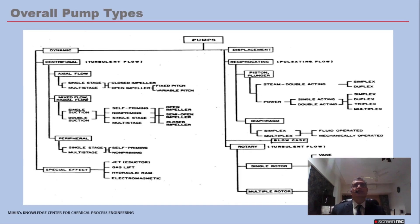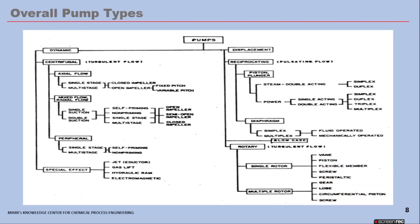We will now review the overall pump types. On the left-hand side we have the dynamic type, which includes centrifugal, axial flow, mixed flow, and radial flow. Then you have the peripheral types and the special effect pumps: jet pumps, gas lift pumps, hydraulic ram, and electromagnetic.